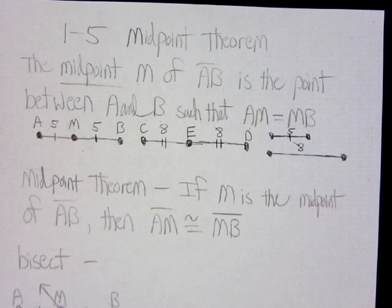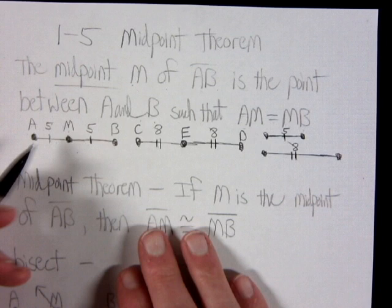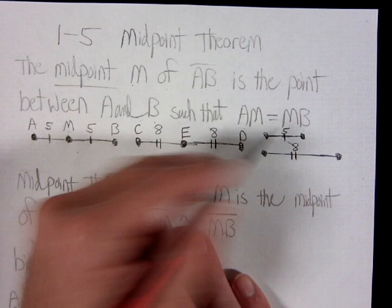Any segment with the same number of congruent marks would be congruent. If one segment has one mark and a length of five, then every segment with one mark must have a length of five. If one segment with a length of eight has two marks, then every segment with two marks must have a length of eight. That's how it works for that particular drawing.